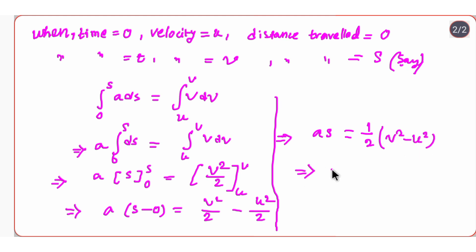Now let's cross multiply, so v squared minus u squared equals 2as. This is our third equation of motion.